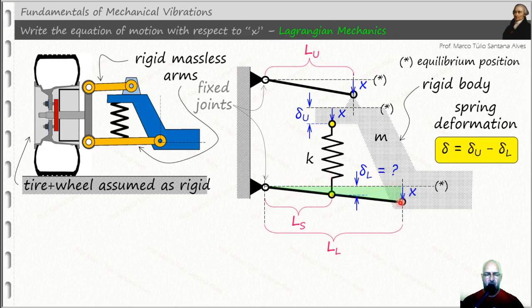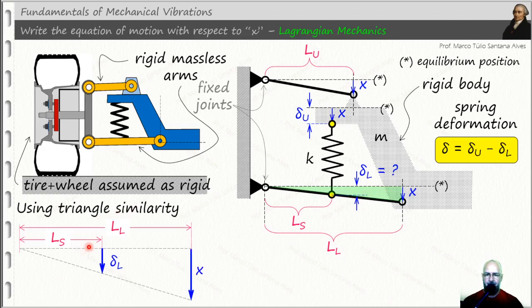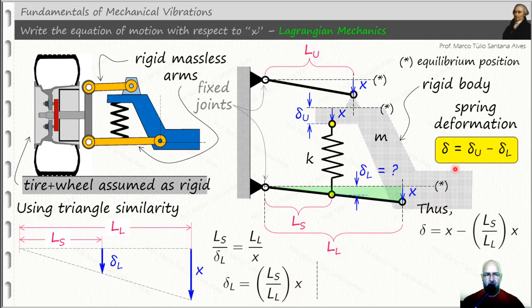Please notice the triangle in green here. We will use this triangle to use triangle similarity, as you can see here. Because we have to determine this delta L here, but it's simple. Ls over delta L equals LL over x.